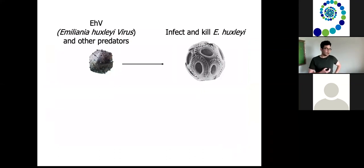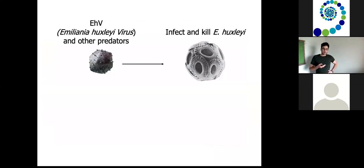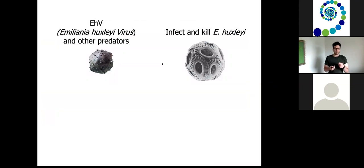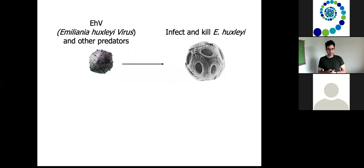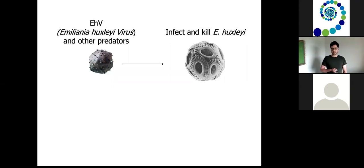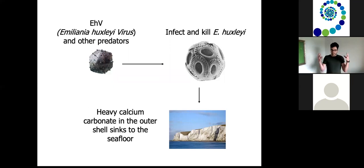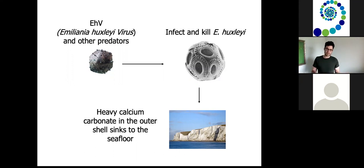Viruses are known to infect Emiliania huxleyi. You might wonder: if these organisms live in the surface ocean where there's lots of light, how do they get to the sea floor? It's been hypothesized that viruses may play a role in this. Specifically, this Emiliania huxleyi virus — creatively named EhV — and other predators infect and kill Emiliania huxleyi. Some of the liths that are liberated as a result — the virus going inside the hosts and bursting the cells open — sink to the sea floor and are involved in the deposition of this calcium carbonate, this chalk.